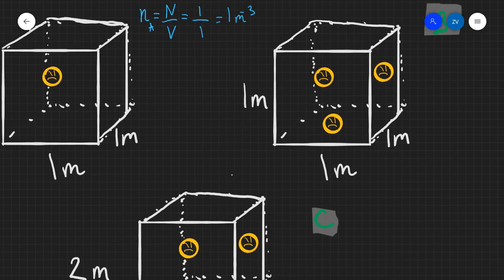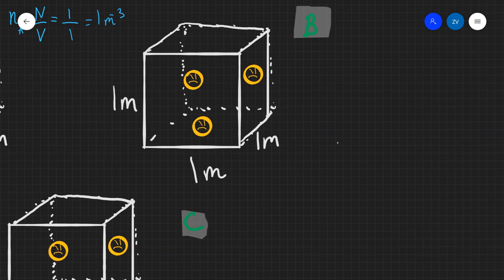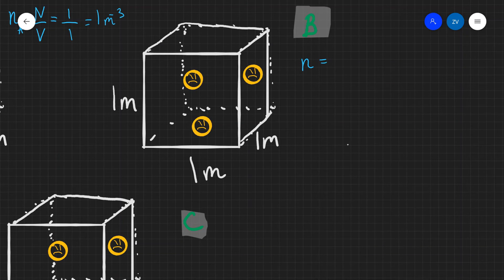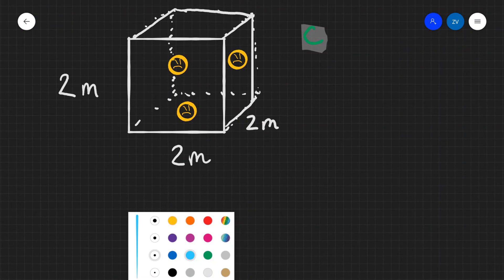Let's do exactly the same procedure for case B. As you can see, we have the same volume — one cubic meter — but this time we have three charge carriers. So the number density equals the number of charge carriers, which is three, divided by the volume, which is still one. This gives us a number density of three charge carriers per cubic meter, so 3 m to the power of minus three.